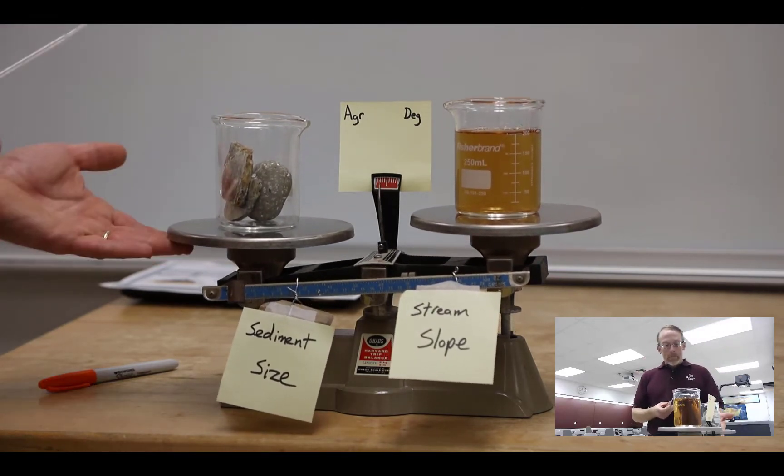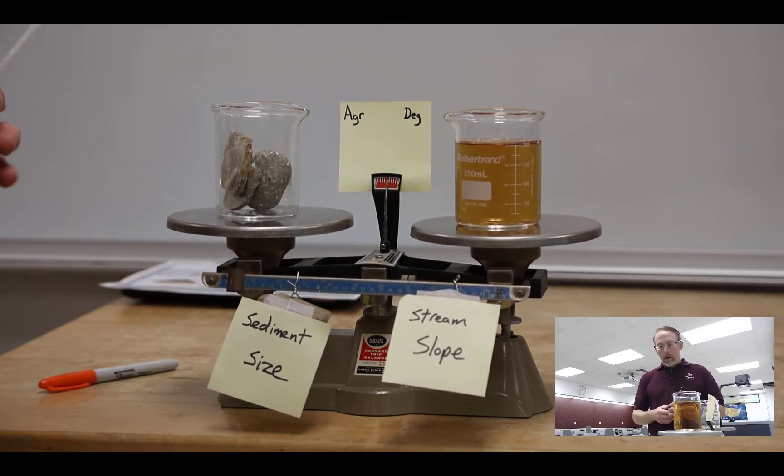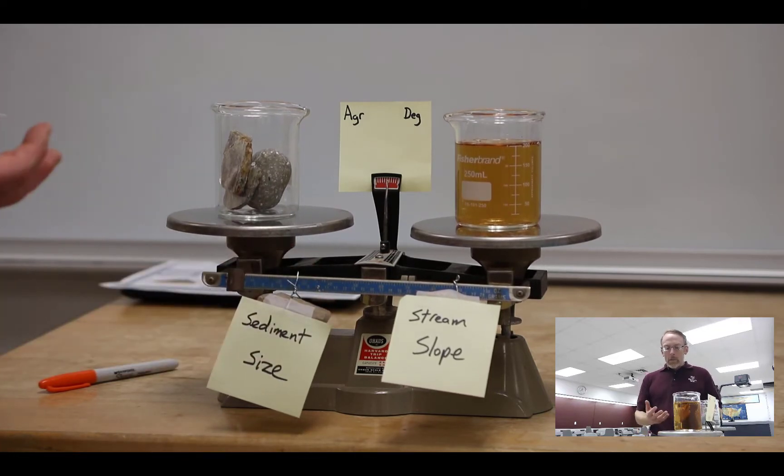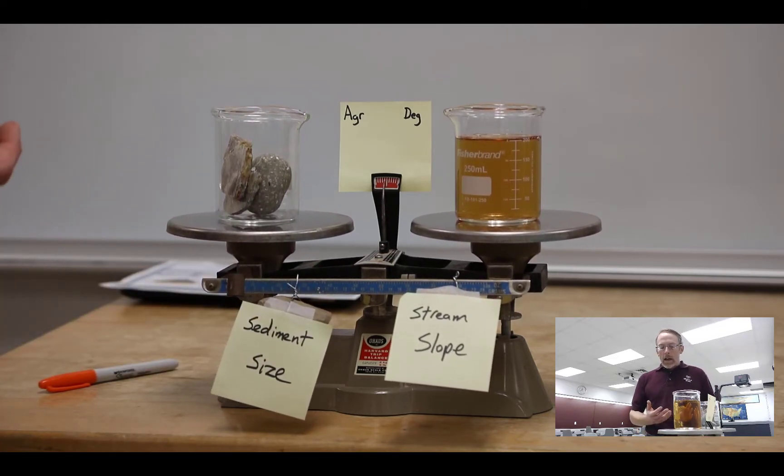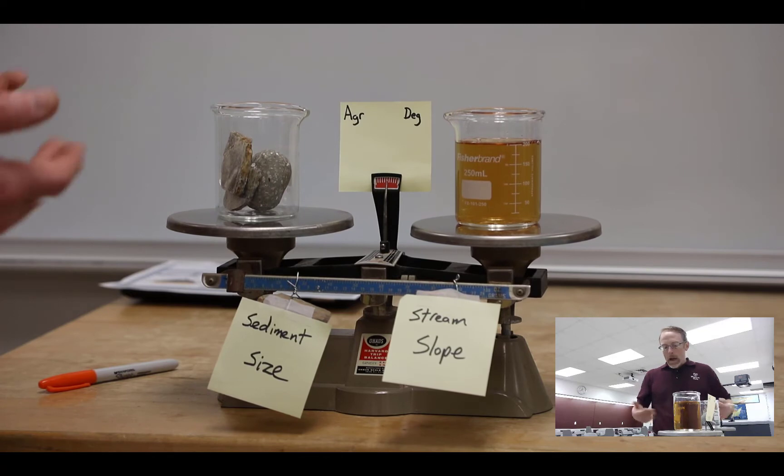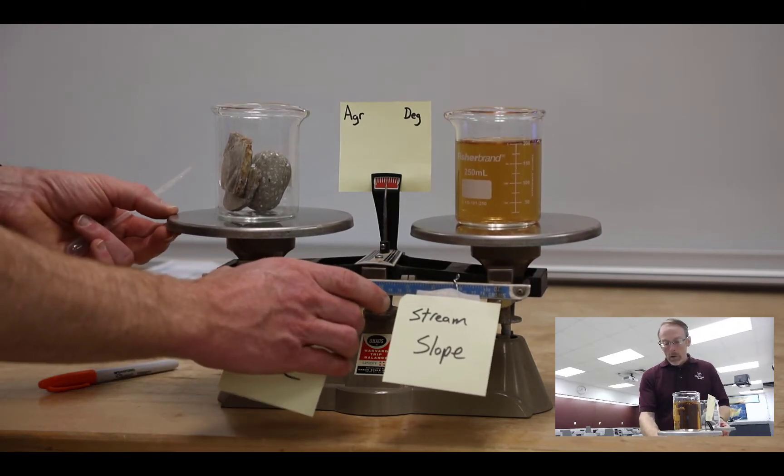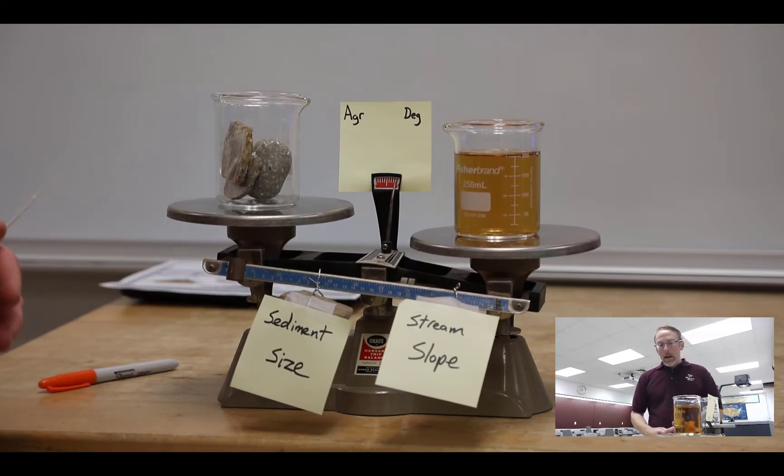Now if we have finer sediments—say our sediment source changes and the average size sediment entering the fluvial system gets smaller—we would move the variable in this direction. That's going to result in degradation. The channel's going to incise into the floodplain because we have the same amount of energy, meaning our stream slope hasn't changed, we have the same amount of water, but smaller sediment size.